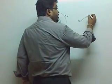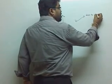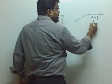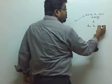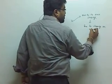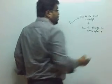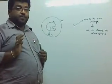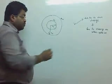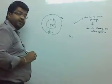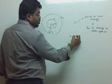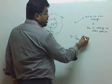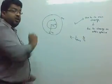The potential at a point will be due to its own charge and due to the charge on the other sphere. For the inner sphere, the potential due to its own charge is 1 over 4 pi epsilon-naught, multiplied by Q1 over R1. This is the potential due to its own charge.